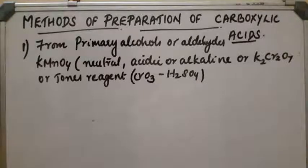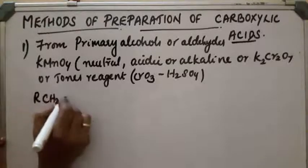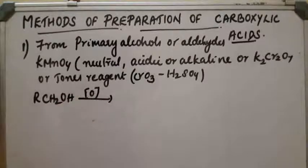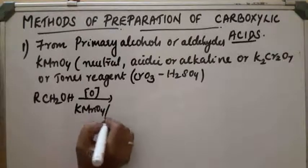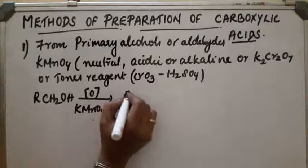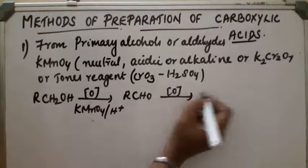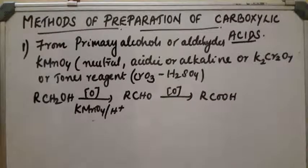From primary alcohols, the alcohol is first oxidized and gets converted into the corresponding aldehyde, which on further oxidation gets converted into the acid. For example, CH2OH (primary alcohol) in presence of acidic KMnO4: first the aldehyde is obtained, which then on oxidation gets converted into the acid.